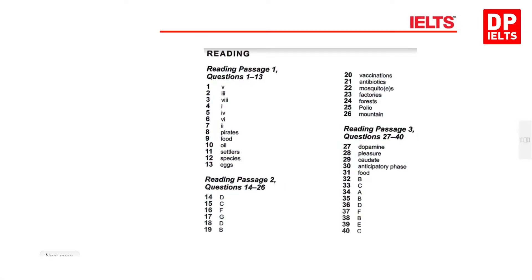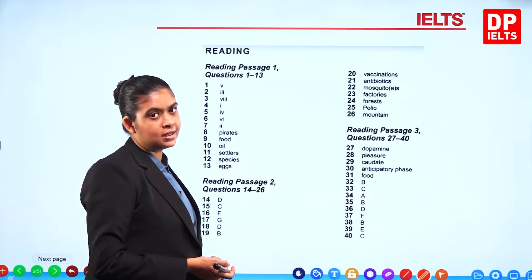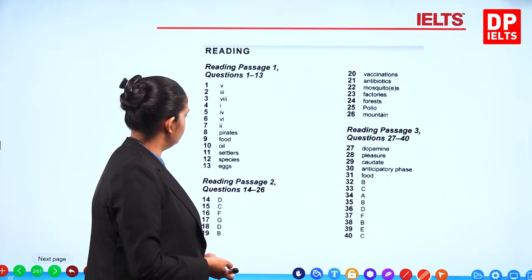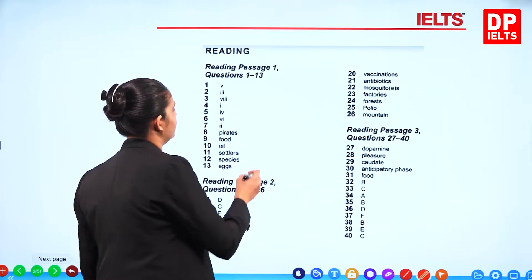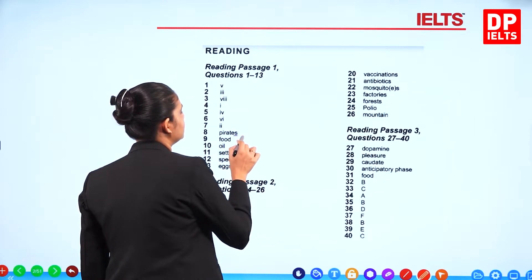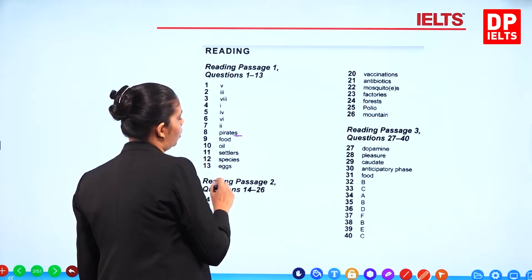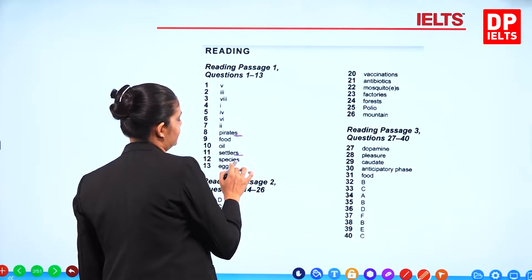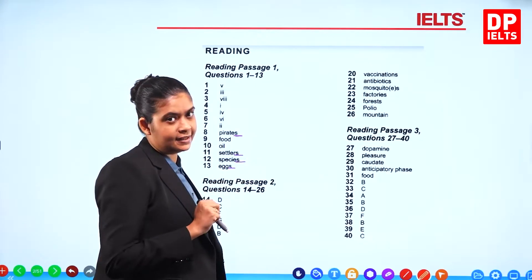The answers for questions 1 to 7 are: 5, 3, 8, 1, 4, 6, 2. Next one — pirates, the S needs to be there. Then: food, oil, settlers, species, eggs.